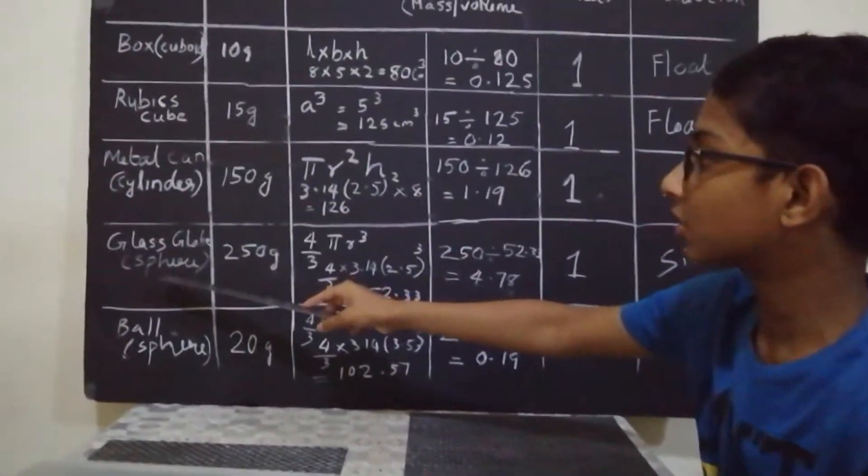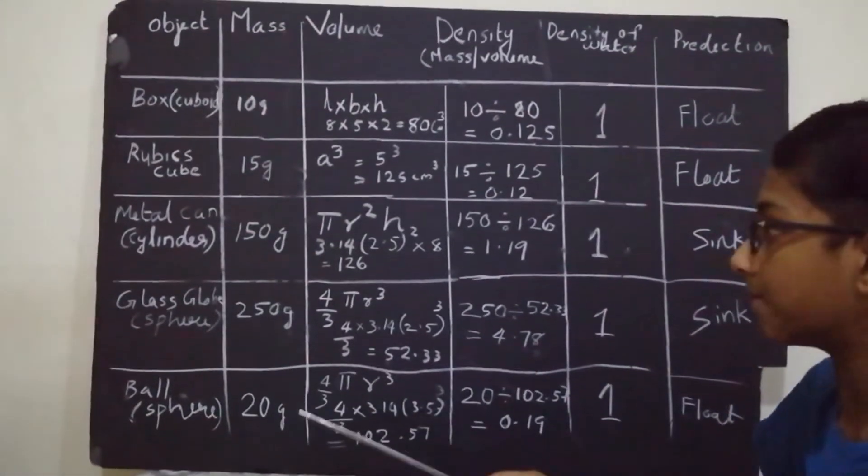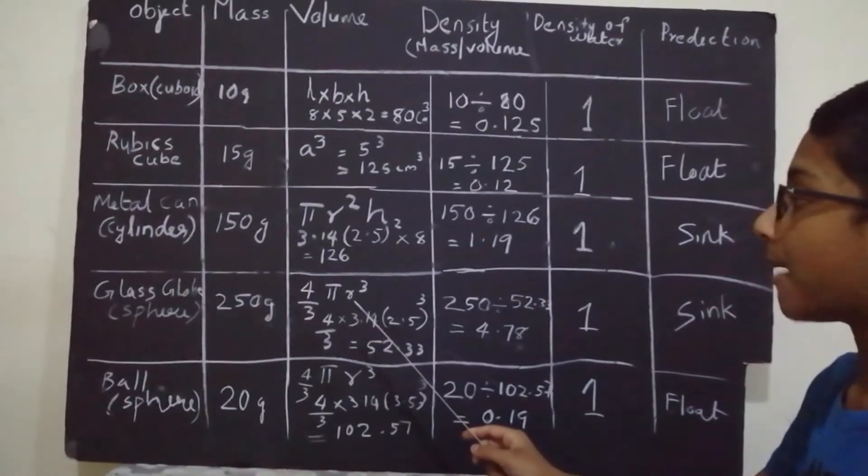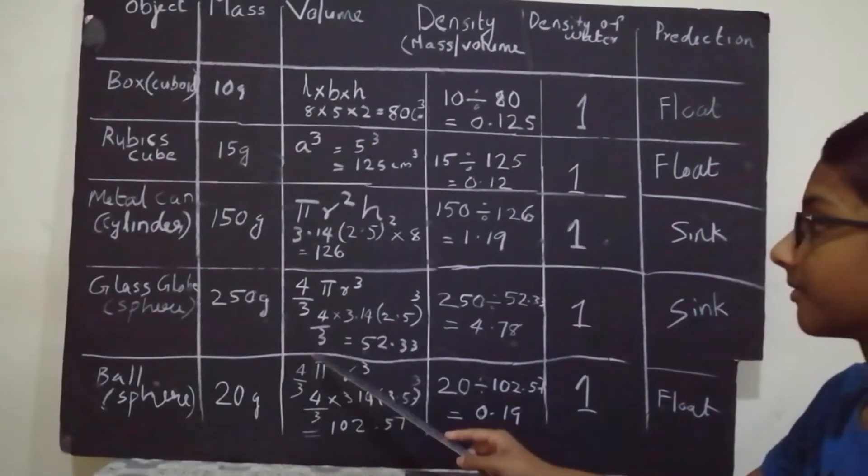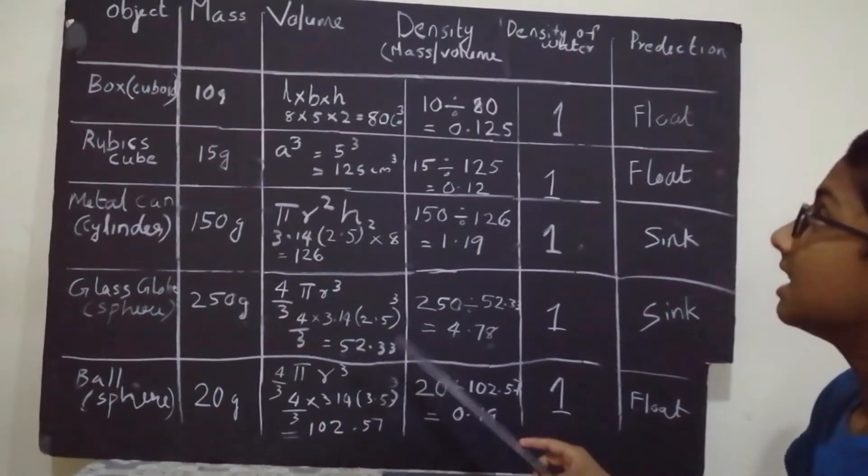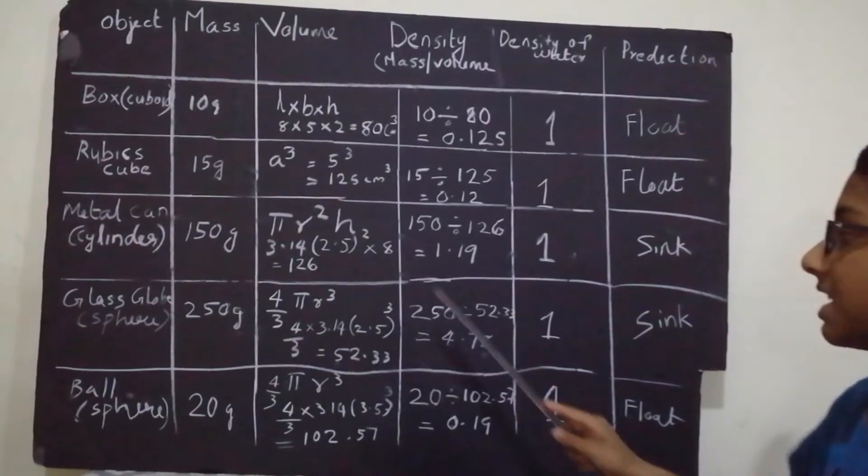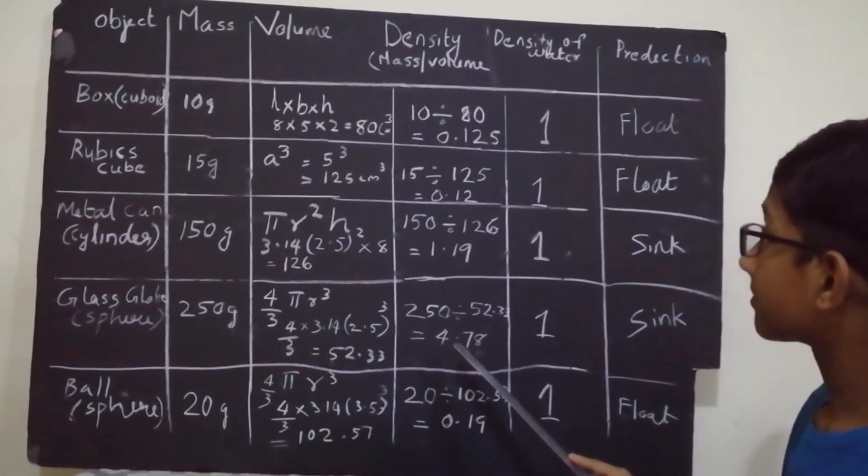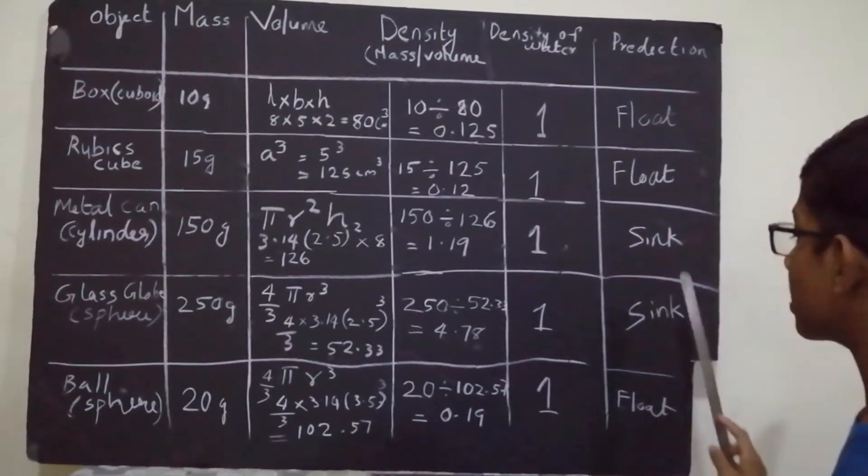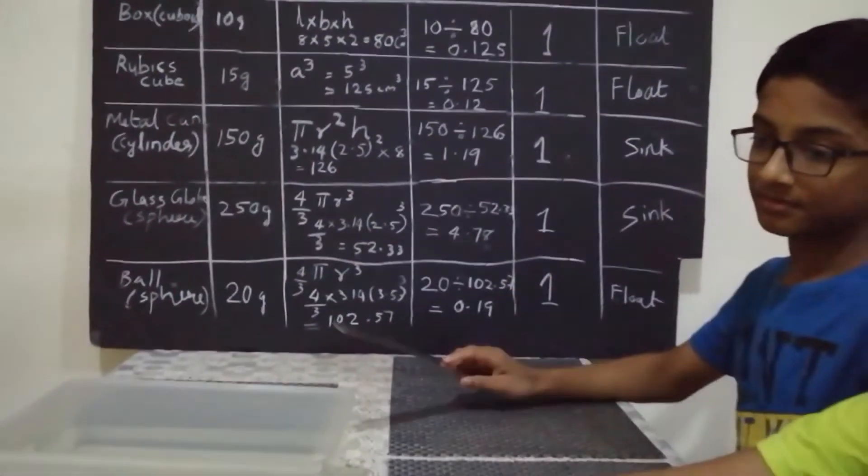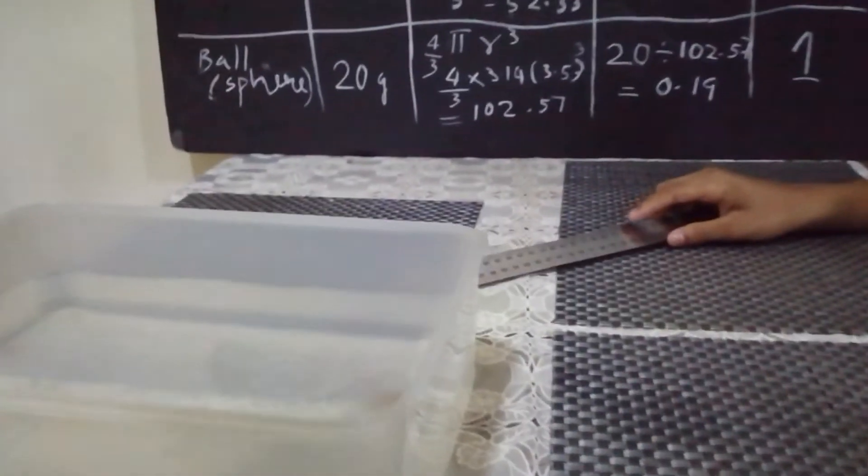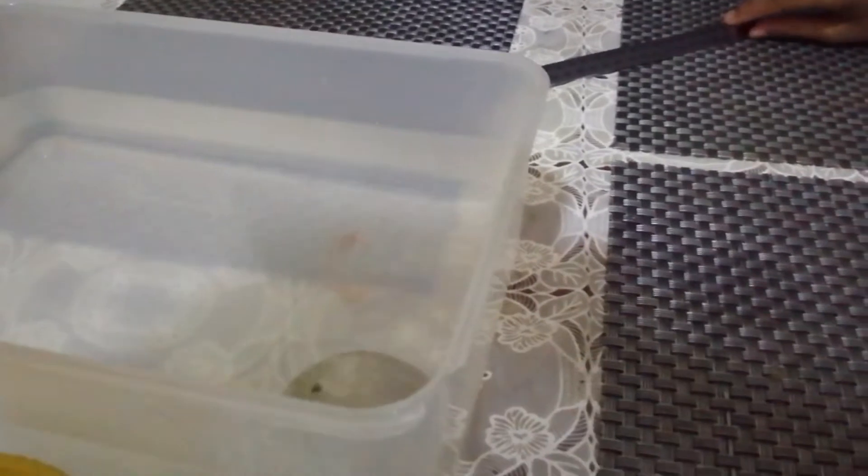Next is a glass globe which is in a spherical shape which has 250 grams. It is 4 by 3 pi r cube equals 52.33. The density of this object is 4.78 which is more than the density of water. So it will sink. Let us check if it is correct. Yes, we are correct. It is sinking.